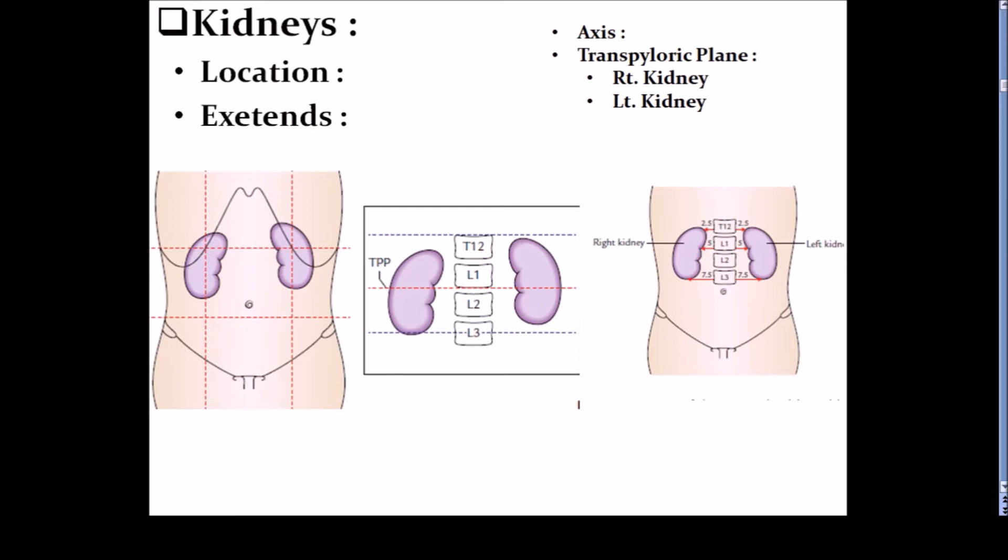Location: kidney, it is a retroperitoneal organ, lies in the posterior abdominal wall by the sides of the vertebral column. It lies in lumbar region, umbilical region, epigastric and hypochondriac region. It extends from the 12th thoracic vertebrae to the third lumbar vertebrae. Axis: long axis of kidney, it goes downward and laterally, upper end nearer to the vertebral column than the lower end. Transverse axis goes laterally and backward because it rests on the sloping paravertebral gutter of muscles. Pyloric plane: the right kidney, it passes from the upper part of the hilum while in left kidney, the pyloric plane passes from the lower part of the hilum.